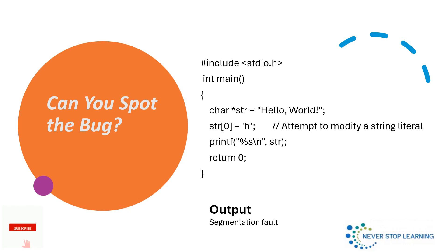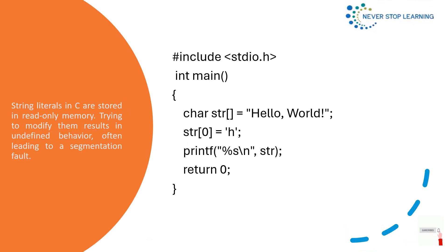So what's the solution? Use array instead of pointer for mutable string. Here, instead of this character string pointer, if we use str as an array, we allocate memory that's writable, avoiding the crash and achieving the desired output.